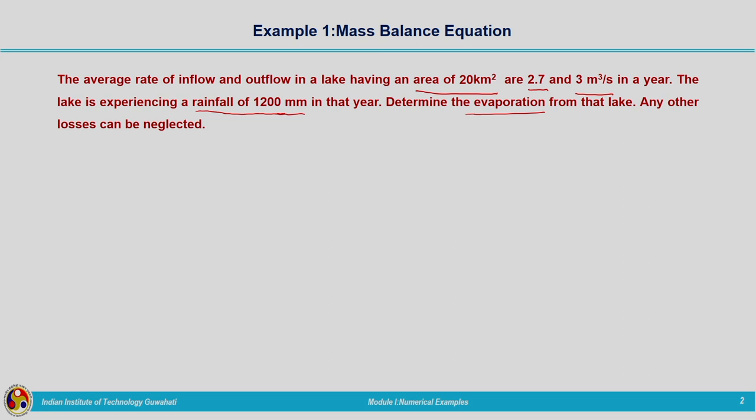We are having a lake, the area of the lake is given, some inflow is coming to the lake and some outflow is going out. Some rainfall of certain intensity is occurring in that area and we need to calculate the evaporation. Any other losses such as infiltration and other losses can be neglected. Now let us start solving this numerical example.